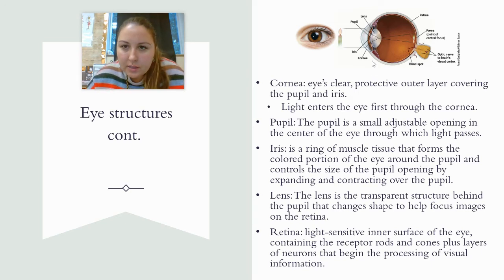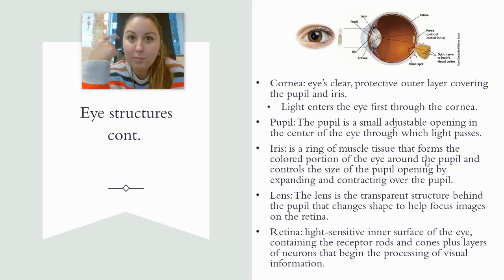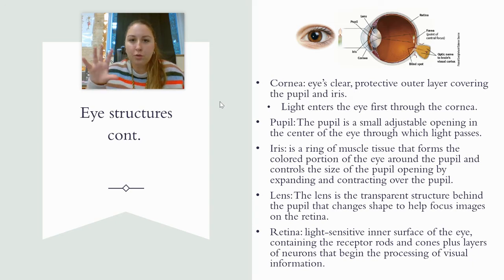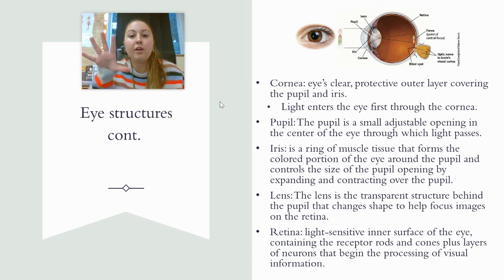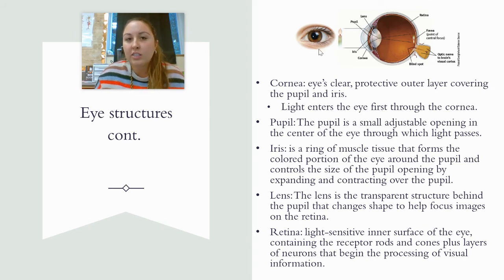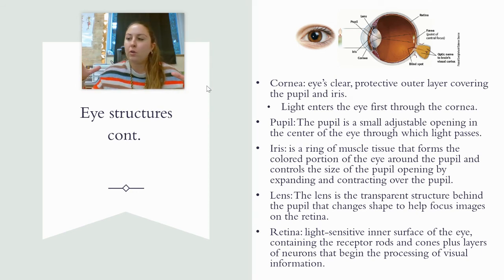Next up is the pupil, which is the little black spot in your eye. The pupil is a small adjustable opening in the center of the eye through which light passes. The pupil can move because it's kind of like a camera lens — it's going to either take in more light and get bigger, or it can get smaller. The iris is a ring of muscle tissue — the colored part of your eye. The iris's job as a muscle is to either constrict or dilate the pupil.